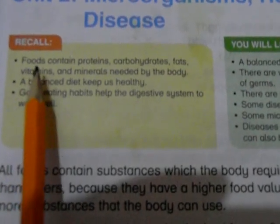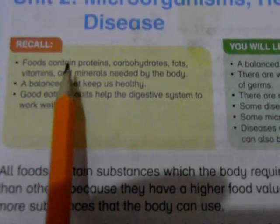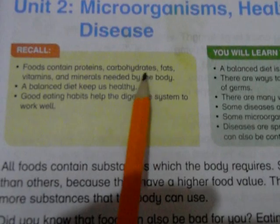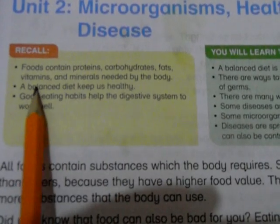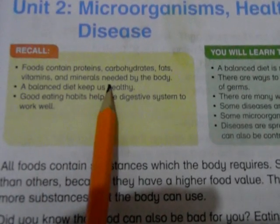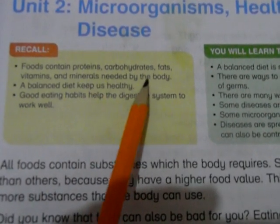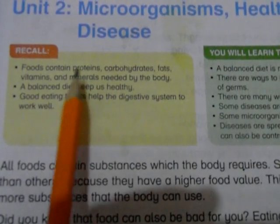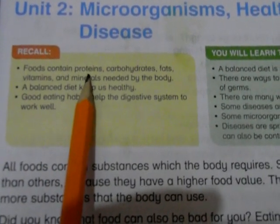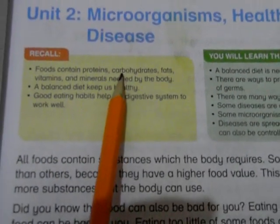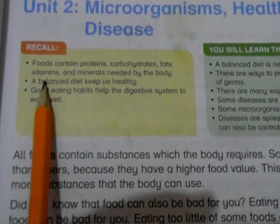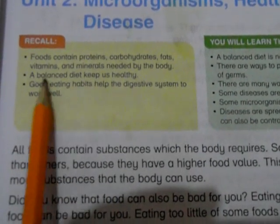Recall from last year what is related to food. Food contains protein, carbohydrates, fats, vitamins and minerals needed by the body. What is the difference between proteins, carbohydrates, fats, vitamins and minerals?